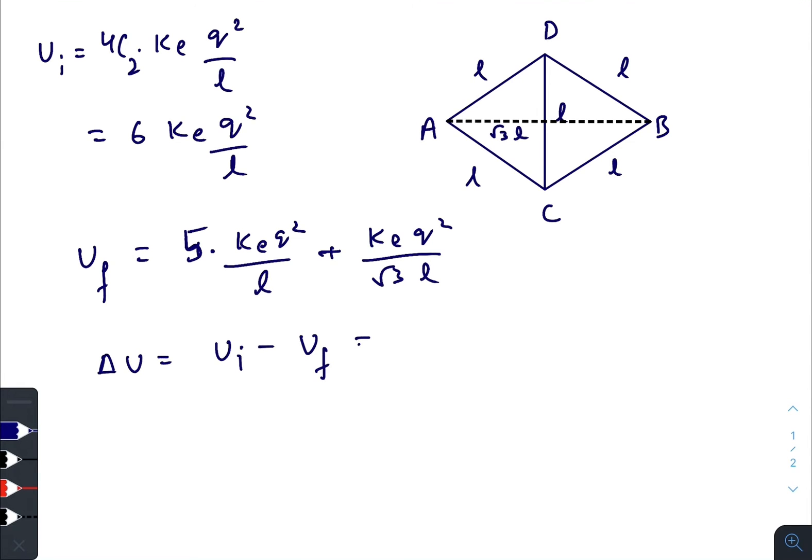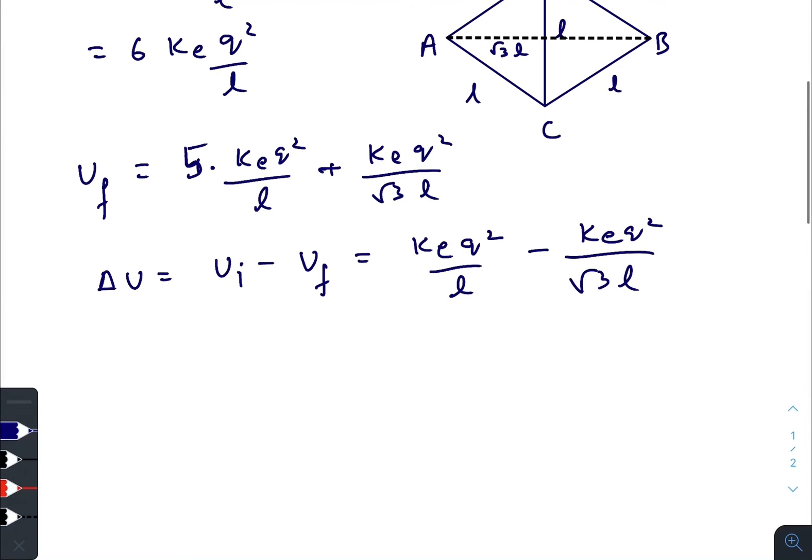U initial minus U final, that is ke q squared divided by l minus ke q squared divided by root 3 l. And this will be utilized to increase the kinetic energy of each particle. For maximum kinetic energy, each particle will have the same speed.